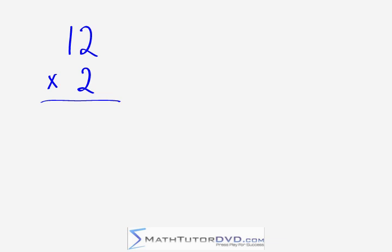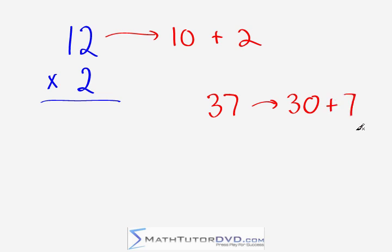If you weren't going to do it by memorization, you would multiply 2 times 2 and get 4 and then 2 times 1 giving you 2 in the front for 24. What I want you to do is forget about doing it right to left. We're going to work left to right but what we need to do is realize that 12 is really 10 plus 2.